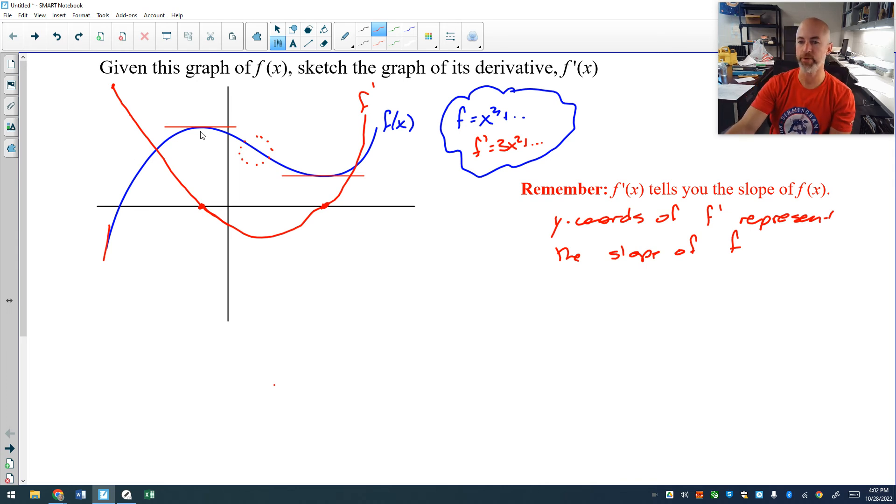So that's what we're going to do to sketch our derivatives. We look for zero slopes first. Then we look big picture. Is my derivative positive or is my derivative negative? Positive means above the x-axis. Negative means below. And that's determined on whether you have a positive or a negative slope of f of x.